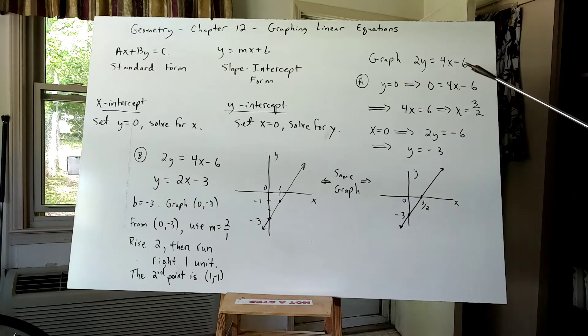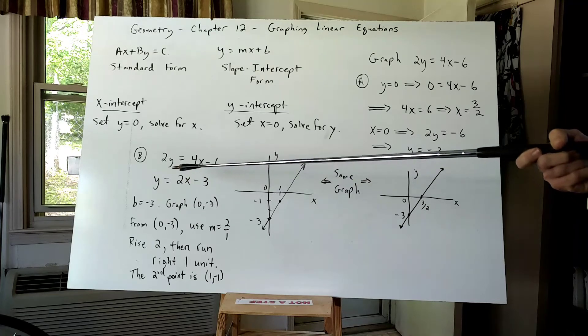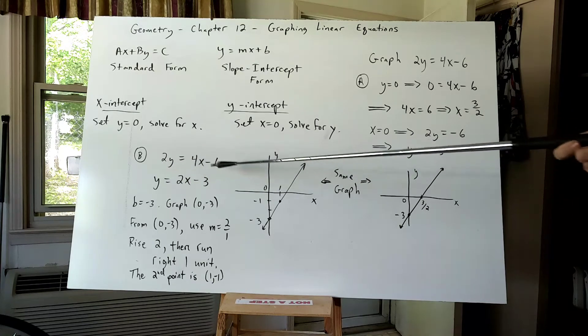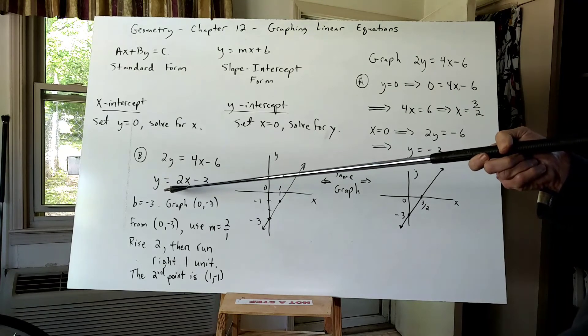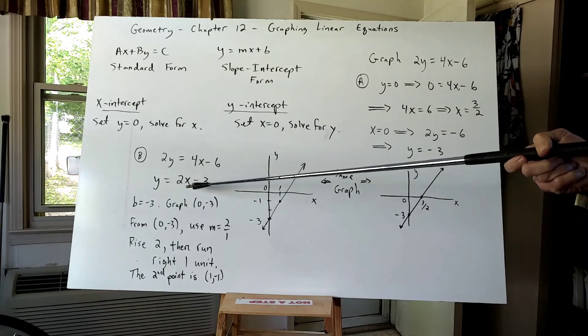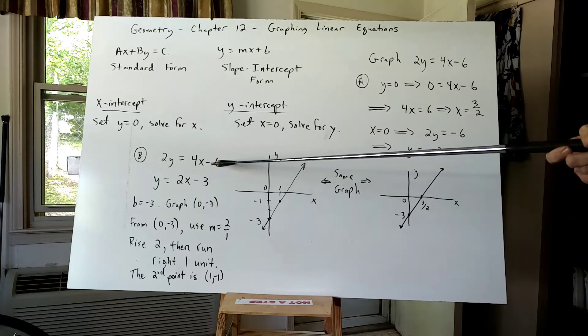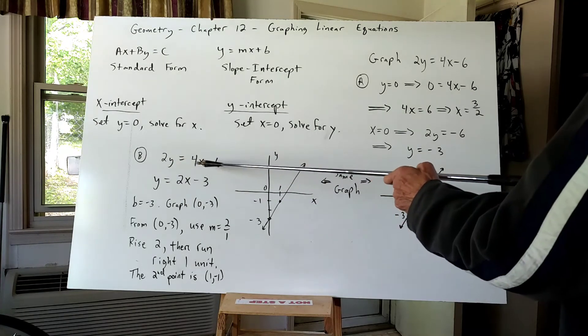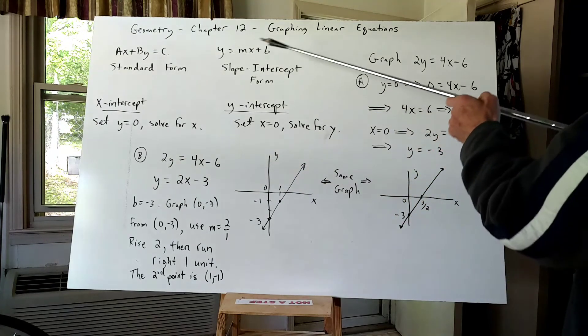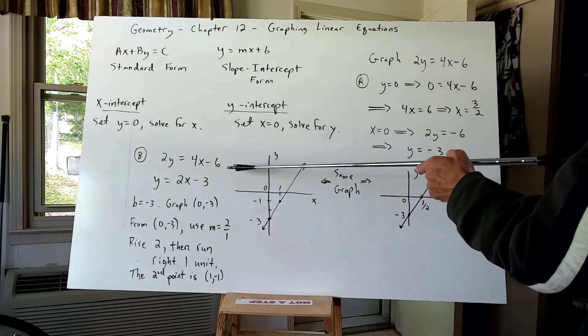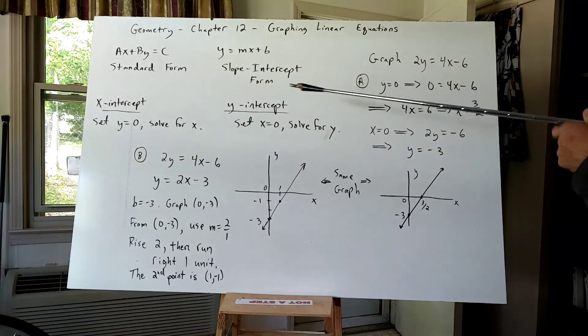I'm now going to graph the same equation, two Y equals four X minus six, over here in part B. But I'm first going to divide everything by two. Two Y divided by two is Y equals four X divided by two is two X and minus six divided by two is minus three. Now notice I have transformed the given equation into slope intercept form. So in part B, I will graph this equation using slope intercept form.